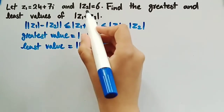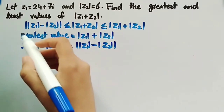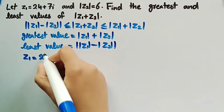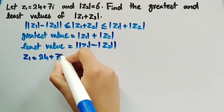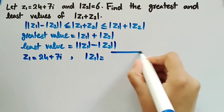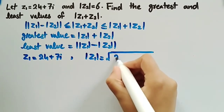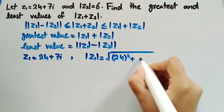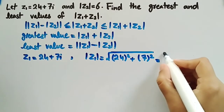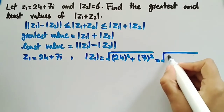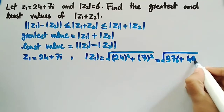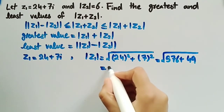Since we know the value of mod of z2, we need to find the value of mod of z1. Since z1 is equal to 24 plus 7 iota, mod of z1 is equal to square root of 24 squared plus 7 squared, which is equal to square root of 576 plus 49, which equals 25.